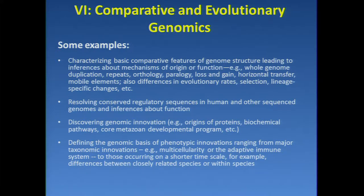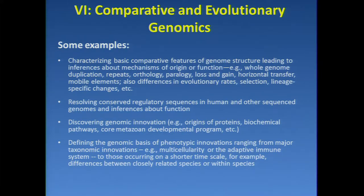Resolving conserved regulatory sequences in human compared to other genomes and making inferences about function is another whole area. Discovering either genomic innovations or the genomic basis of phenotypic innovations — whether that's the origins of multicellularity or the origins of the adaptive immune system — although there are questions addressed over a shorter evolutionary time scale, like differences between closely related species or even among individuals within the same species. So that's the kind of scope that we're looking for.